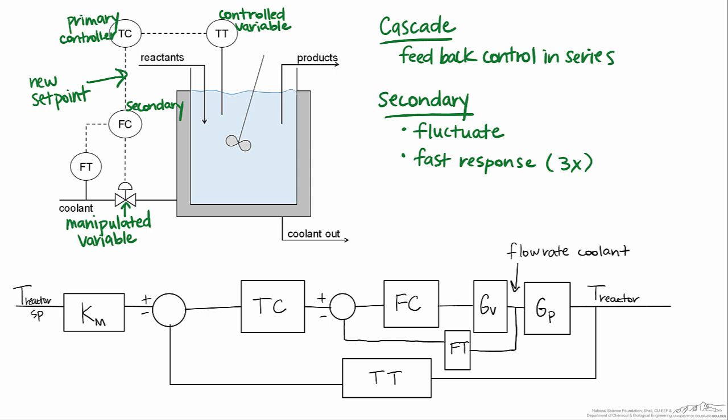Generally when tuning you tune from the inside out, so therefore in this case we would tune by starting with the secondary loop, then the primary loop. So for the sake of what we're talking about here this would be the flow loop first, then the temperature loop. The stability of the process can be greatly influenced by how the secondary flow loop has been tuned.